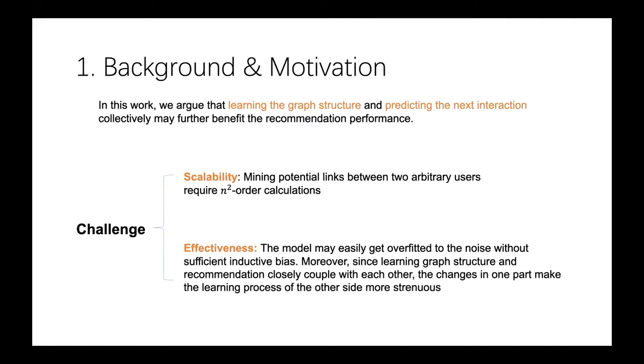Second, the effectiveness issue. With the huge number of potential links among the users, the model may easily get overfitted to the noise. Also, since learning graph structure and recommendation closely couple with each other, the change in one part makes the learning process of the other side more strenuous, especially when we initialize both parts with random states.